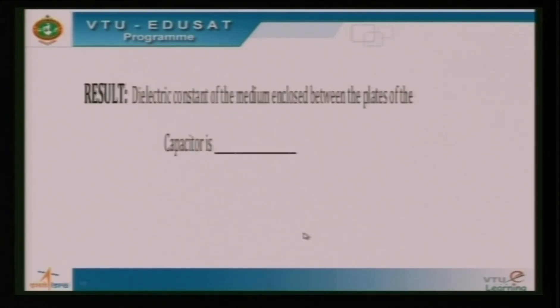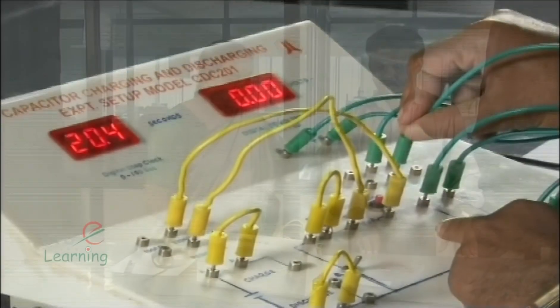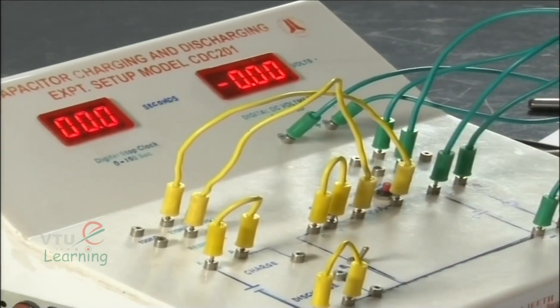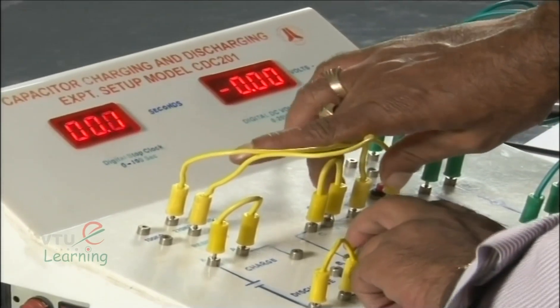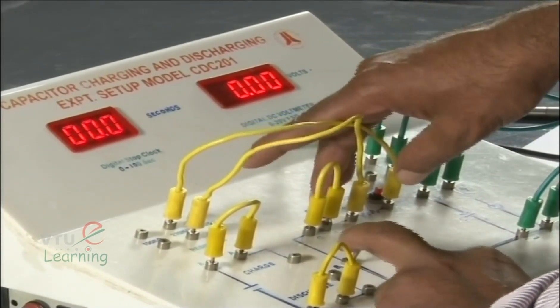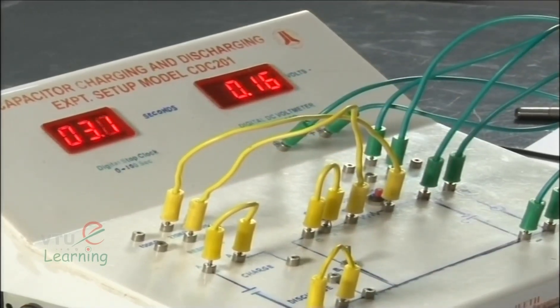This is how we determine the dielectric constant of the material enclosed between the plates of the capacitor. One could also perform the experiment using a different capacitor such as C2, repeating the same procedure. The dielectric constant measurement helps us fix the value of the capacitance of a capacitor, which has practical applications in various sectors.